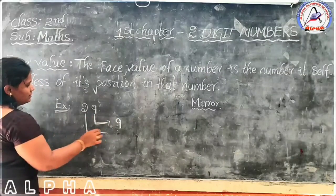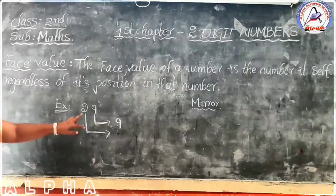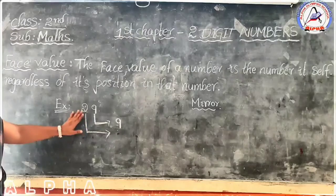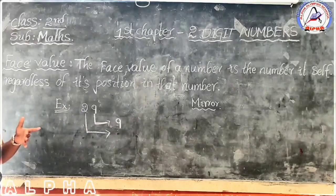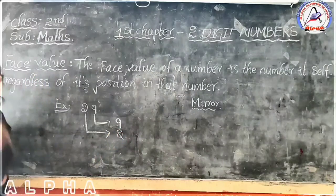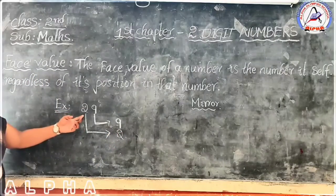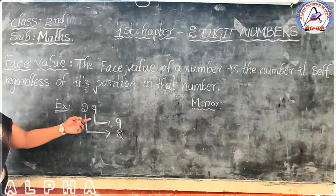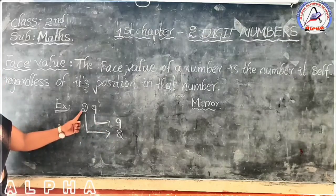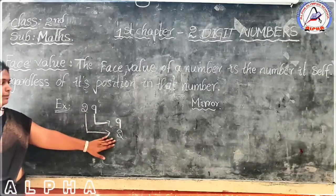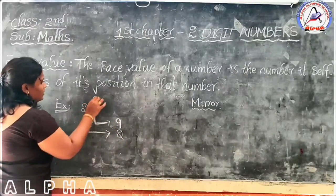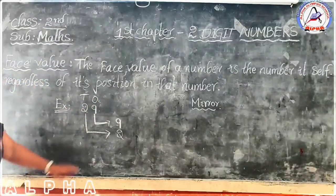See here — there is no need to consider place value here. We are only looking at the face value. That's why I write the face value as 2 here. Whatever number is appearing in the front is called the face value. That's why we write the appearing number as the face value.